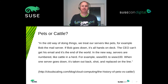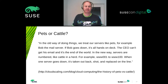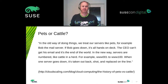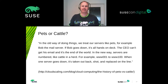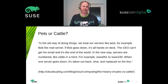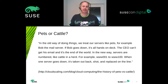Pets or cattle — in the old way of doing things, we treat our servers like pets. For example, Bob the mail server: if Bob goes down, it's all hands on deck, the CEO can't get his email, and it's the end of the world. In the new way, servers are numbered like cattle in a herd — for example, from www1 to www100. If one server goes down, it's taken out, removed, replaced, and a new one is put in line.